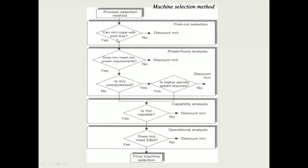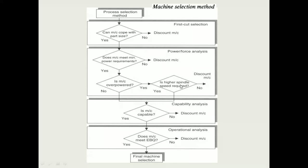If yes, we proceed to power force analysis: does the machine meet the minimum power requirements? If yes, we check whether the machine is overpowered. If overpowered, we check whether a higher spindle speed is required. If the power is more, the machine spindle speed is higher, and if yes, we proceed to capability analysis.